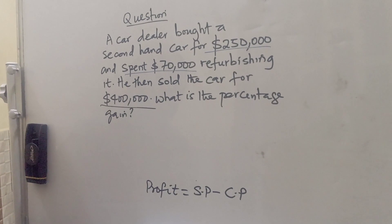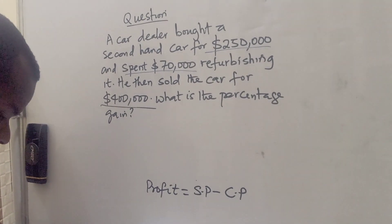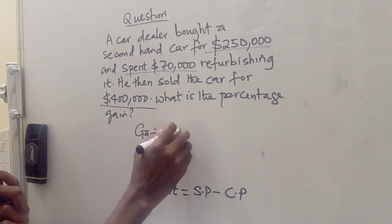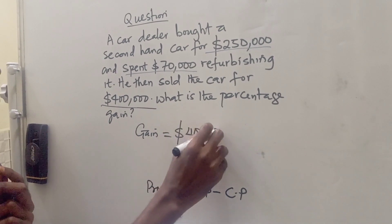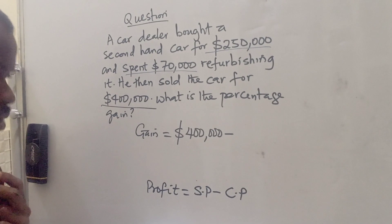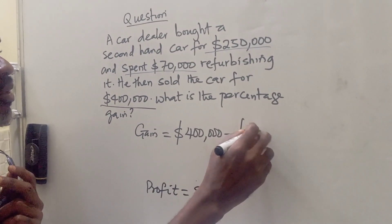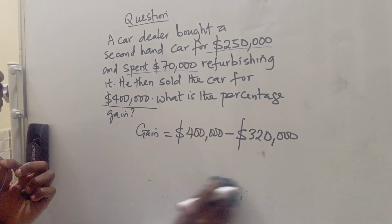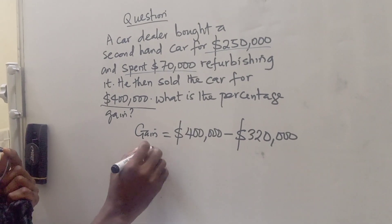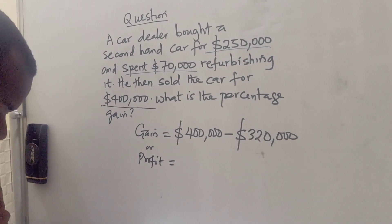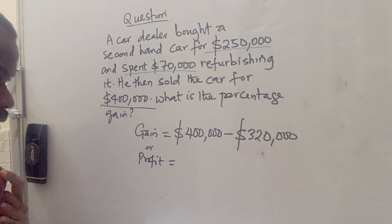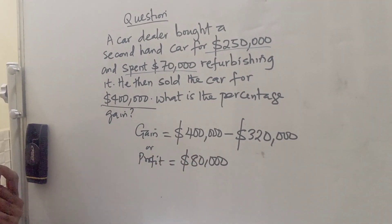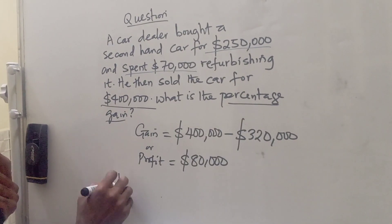So our selling price is $400,000 minus our cost price of $320,000. If we subtract those two, we can see that he made a gain of $80,000. So the question now asks for the percentage gain.